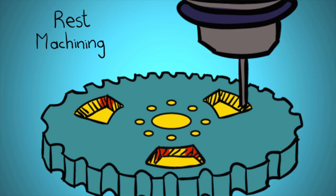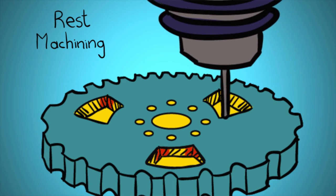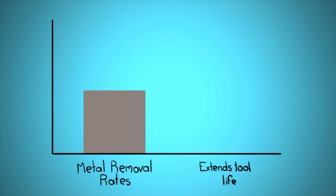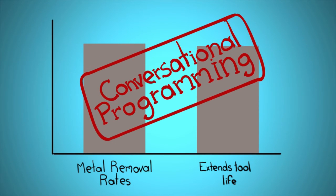That's because Adapt-A-Path targets the tight spots after you rough the part and knows exactly what material it needs to remove. So Adapt-A-Path not only increases metal removal rates, it extends tool life, all with conversational programming.